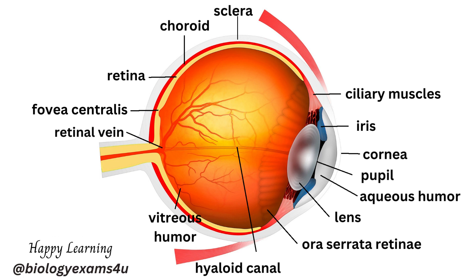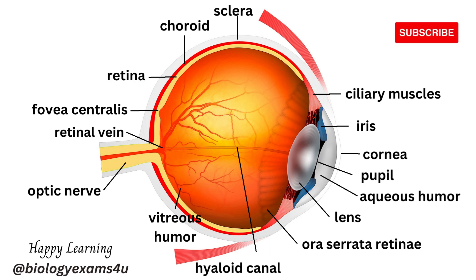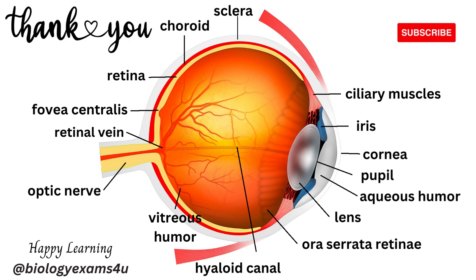The retinal vein carries blood away from the retina. Finally, the optic nerve is the largest sensory nerve of the eye — it is really an extension of the central nervous system of the brain. It transmits electrical impulses from our eyes to our brain, which processes this sensory information so that we can see.